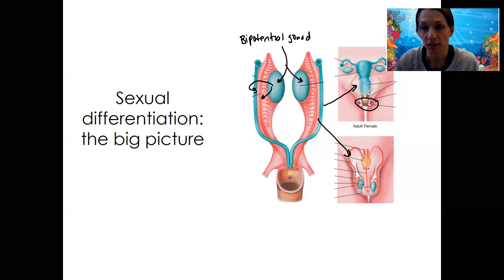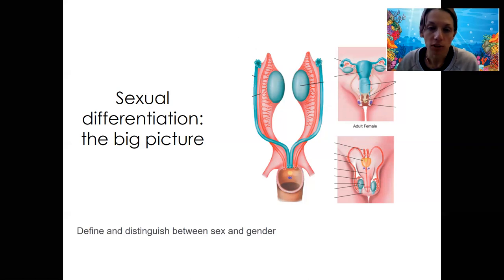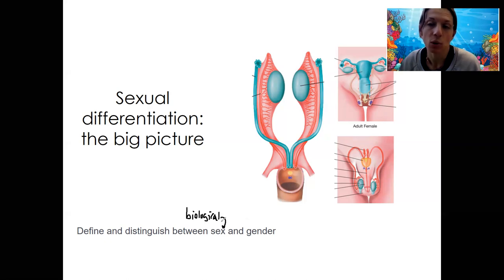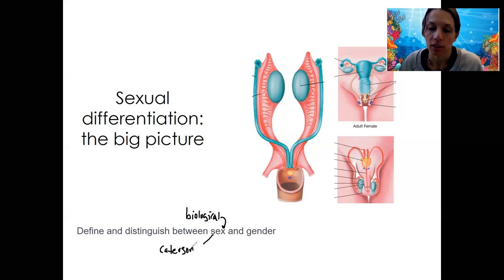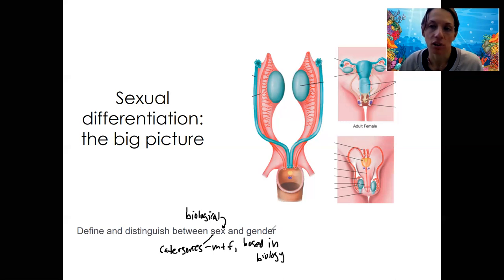Before we dive in, I want to start by defining sex versus gender. We will be focused on biological sex. The main thing I want you to be able to do is contrast that and know that it's different terminology than gender. Biological sex is typically categories that are male and female based solely on biology, and those categories aren't always perfect, but that's the focus of today's lecture.